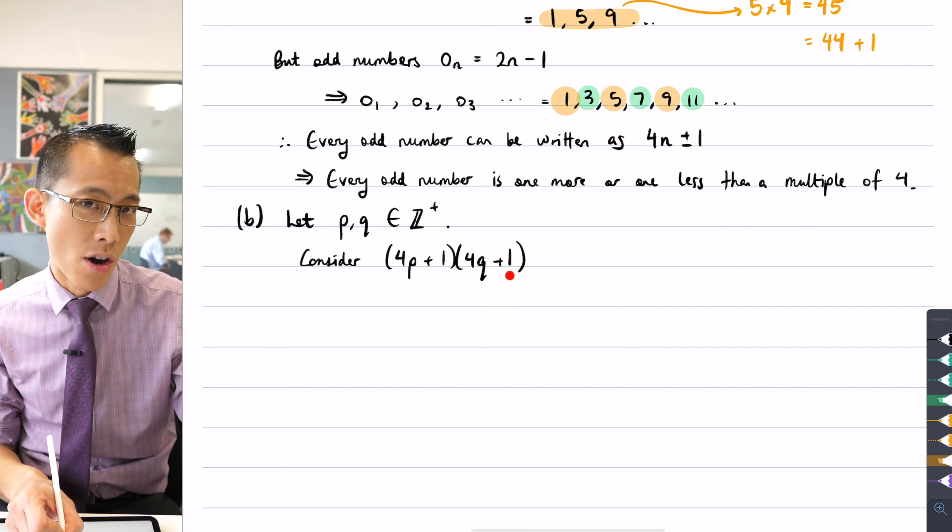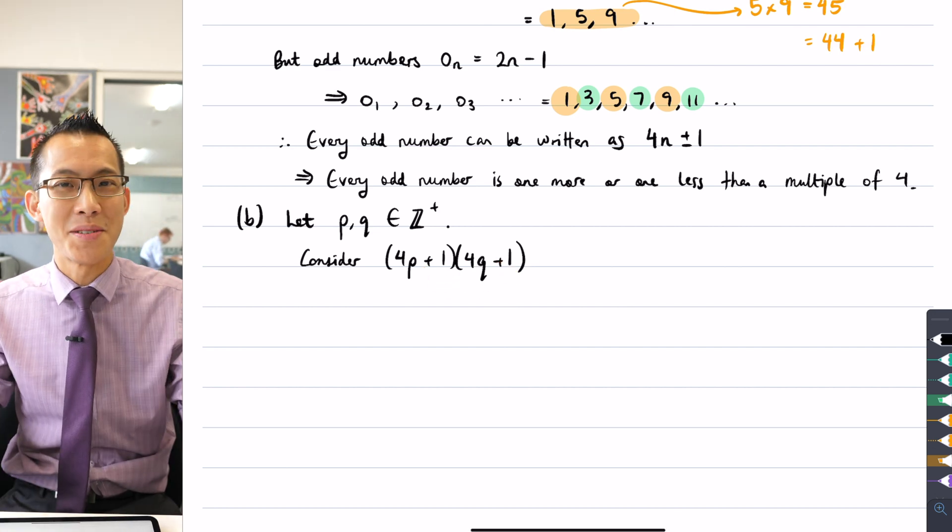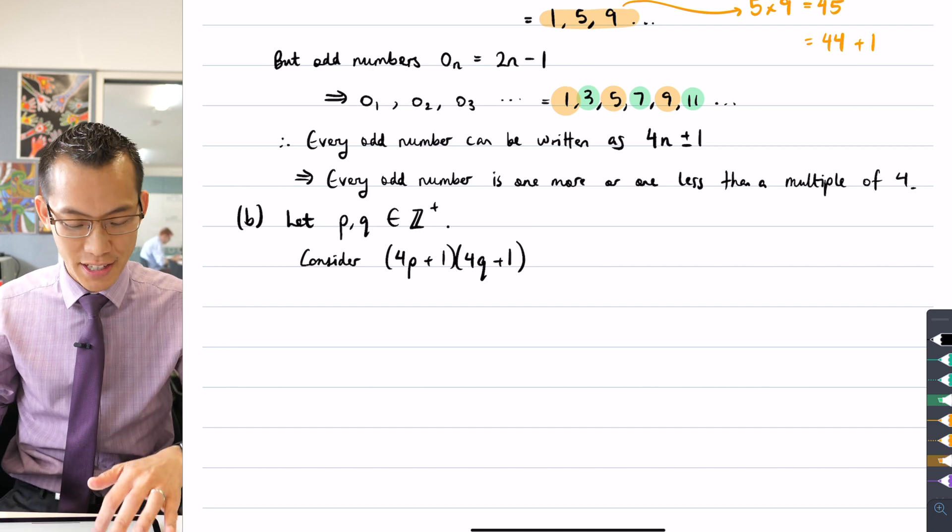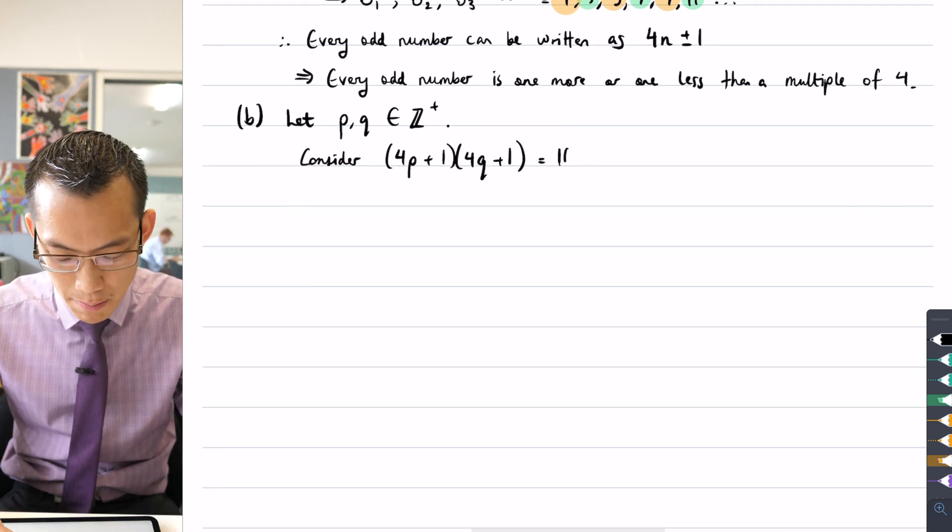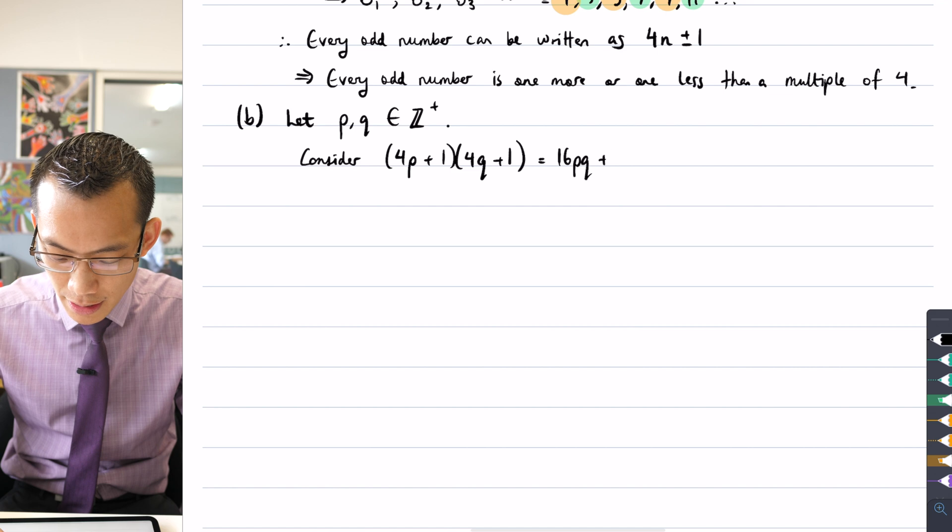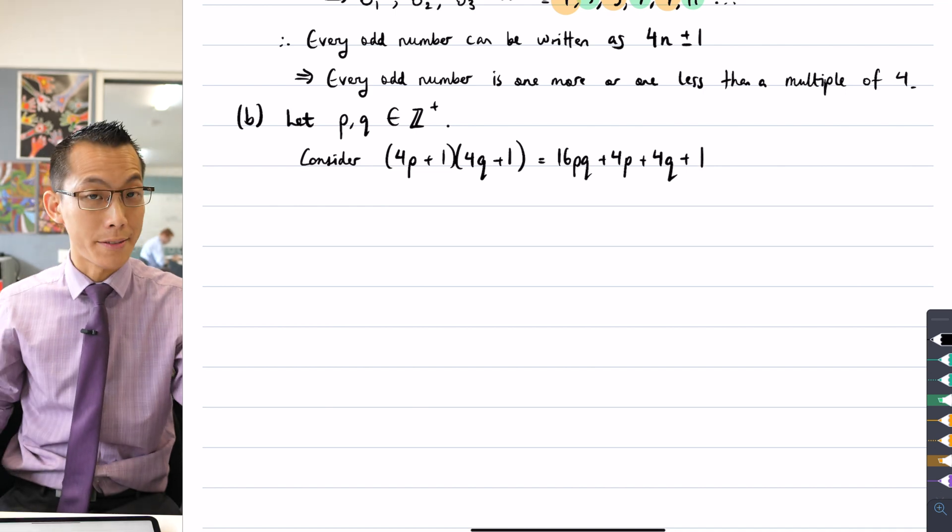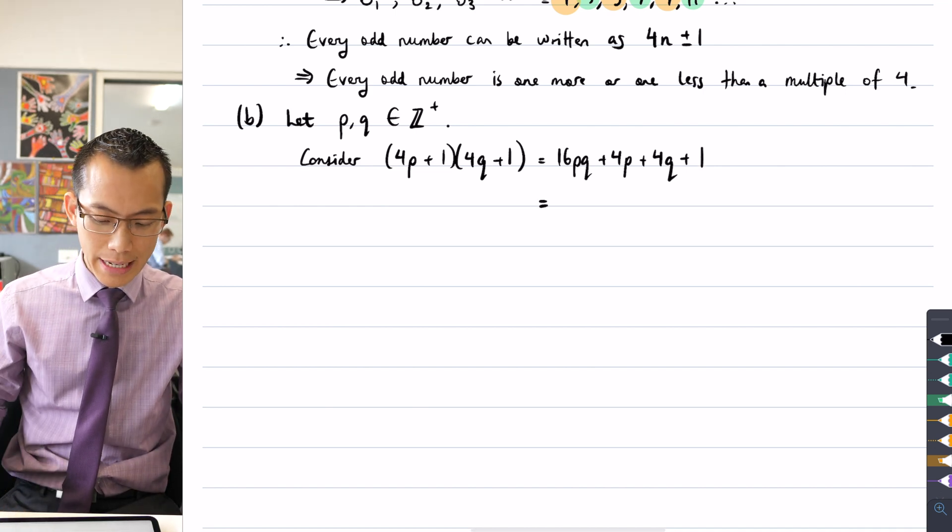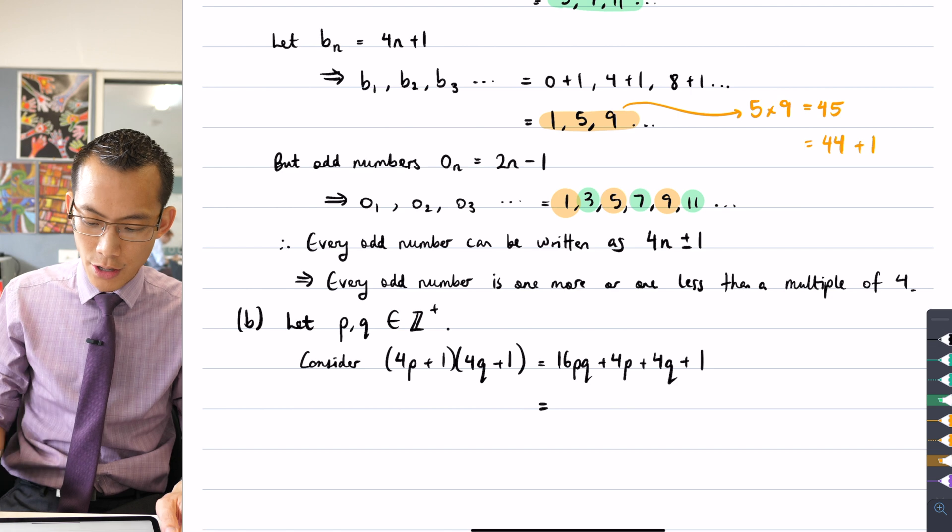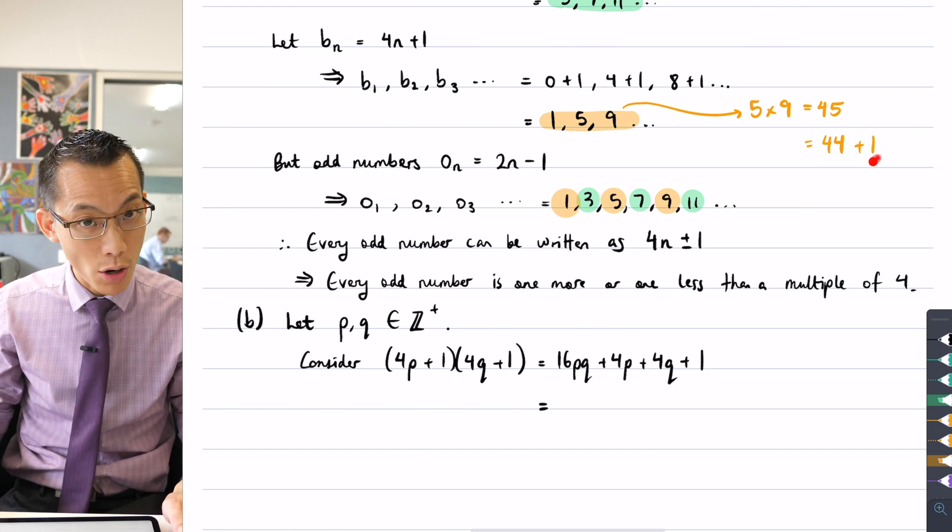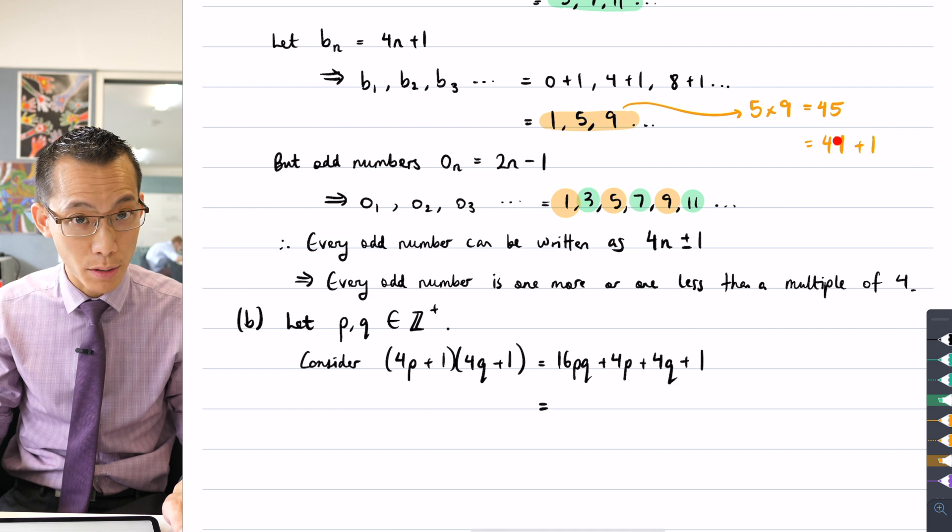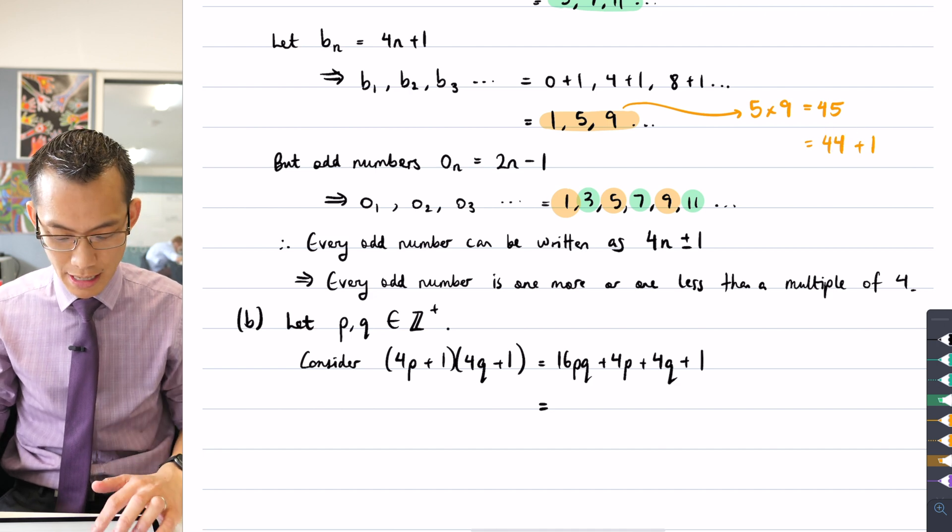So here's the first version of 4N plus one and here's some other 4N plus one. We tried out 5 and 9 in our previous example just to convince ourselves that it worked. Let's just expand this right. So what am I going to get? 16PQ, I'm going to get 4P plus 4Q, and then the last terms just give me one. Right, now what am I trying to get to? Well, I'm trying to show, as I did over here, that I've got a plus one over here and then everything else is a multiple of four.